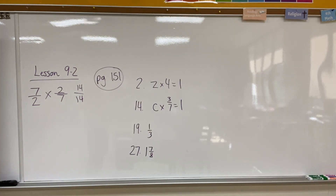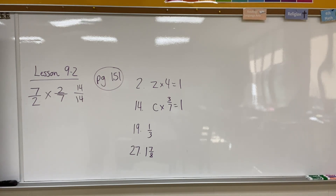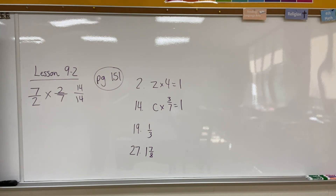All right, my fifth grade friends. If we take a look at page 151, you will see that we're going to be doing four practice problems today: number 2, 14, 19, and 27. For number 2 and 14, the directions say find the value of the missing reciprocal in the multiplication sentence, so you're going to figure out what that missing variable is. For number 19 and 27, you're just trying to find the reciprocal of that number by flipping the numerator and the denominator. For number 27, make sure you use the checkmark method to turn it into an improper fraction first, then flip the numerator and the denominator. If you have any questions on reciprocals, please let me know when you come to class tomorrow.